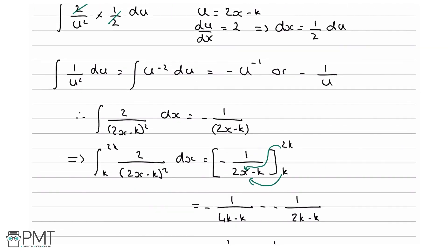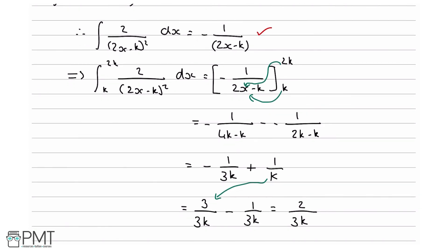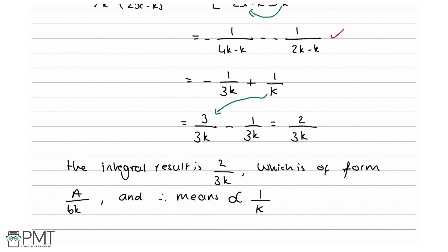This question is worth 3 marks. Your first mark comes from getting that the integral of 2 over (2x minus k) squared equals minus 1 over (2x minus k), without evaluating the limits. Your second mark comes from plugging in the limits to get the substituted expression. Your third mark comes from getting that the integral is 2 over 3k and being aware that this means it is inversely proportional to k — the mark scheme puts that in brackets, so it's not technically required, but concluding it is a good idea.